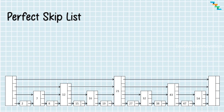Now we will see how to search an element in the perfect skip list. We will search for element 27. Starting from the head node, we traverse the topmost layer. From the head node, it goes to element 21. We compare 21 to 27 — 21 is less than 27. We check the next node in the layer, which is tail. So we go one level below from node 21 and traverse to the next element in that layer, which is 43.